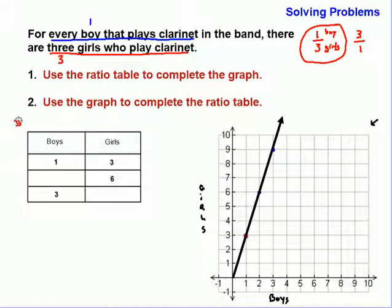So now let's take a look at filling in the graph from the chart. This now says to use the graph to complete the ratio table. So over here on our graph, what do we have? We see that 2 boys is equivalent to 6 girls. So we can fill this out over here. We'll say 2 boys. For every 2 boys, there will be 6 girls that play clarinet. And then for every 3 boys, there will be 9 girls who play the clarinet. So 3, 2, 9.